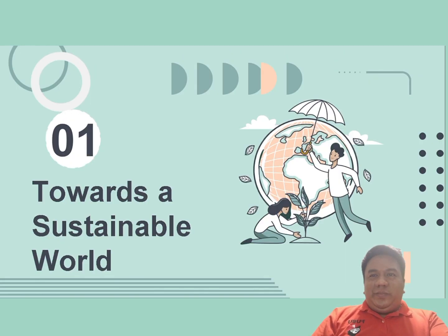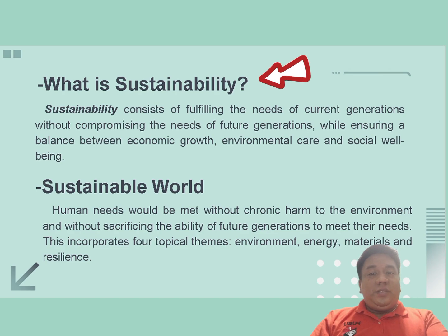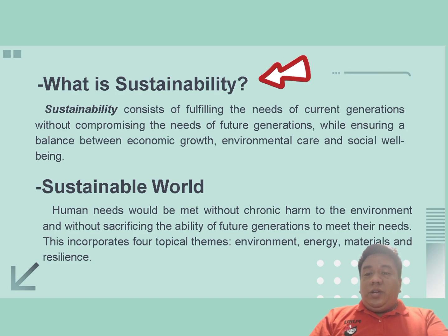Let's proceed with the first part: Towards a Sustainable World. Sustainability refers to maintaining current resources, environmental care, and economic growth of our society so that even future generations will benefit. A good example is business, because in business we have to sustain and maintain profit, assets and liabilities, to ensure progress, growth and expansion that future generations will also benefit from. In the contemporary world, we talk about sustainability of economic growth, resources, and social well-being.